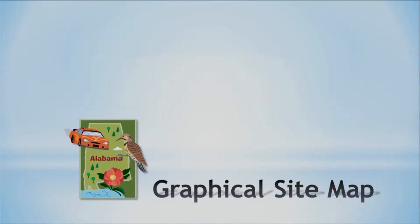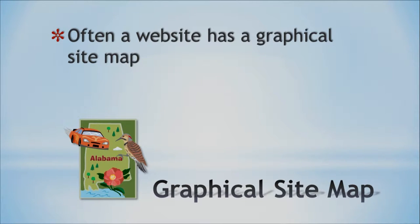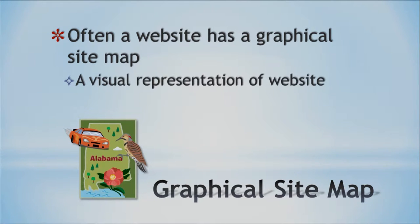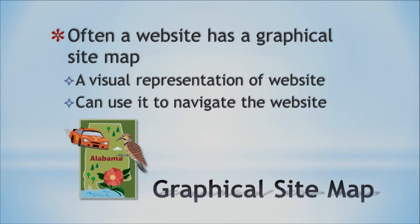A website often has a graphical site map — that's the state of Alabama there, that's where I'm from. Just like a regular map where you figure out where you're at and where you're going, a site map is a visual representation of the website that you can use to navigate it. So just like navigating with a map, you've got a map to the website. Good to have.